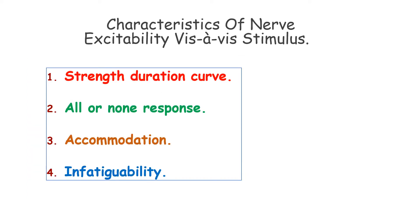The study of nerve excitability with respect to stimulus can be done under four subheadings: strength-duration curve, all-or-none response, accommodation, and infatigability.